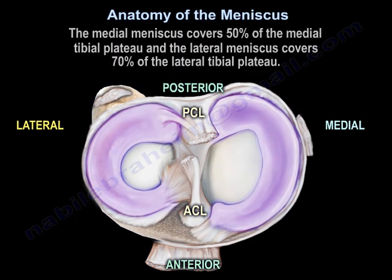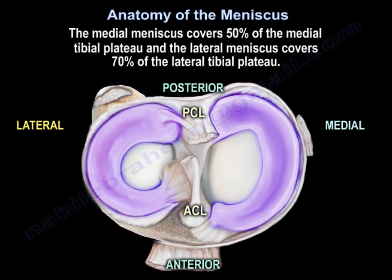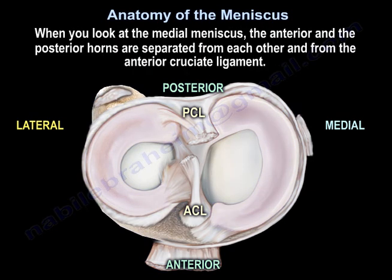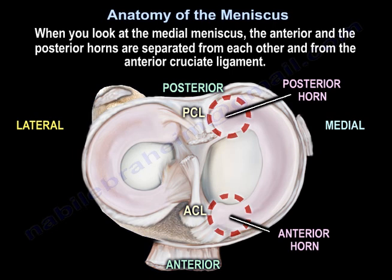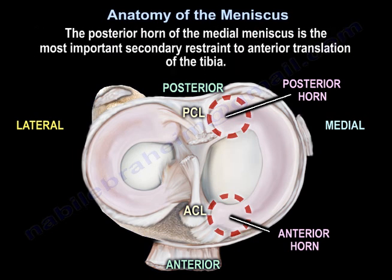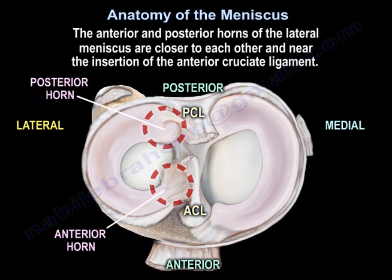The medial meniscus covers about 50% of the medial tibial plateau and the lateral meniscus covers about 70% of the lateral tibial plateau. The anterior and posterior horns of the medial meniscus are separated from each other and from the anterior cruciate ligament. The posterior horn of the medial meniscus is the most important secondary restraint to anterior translation of the tibia.